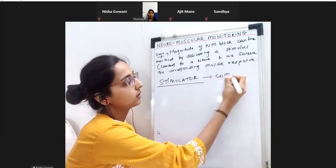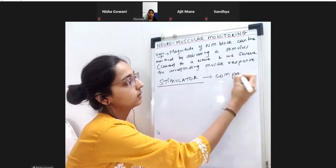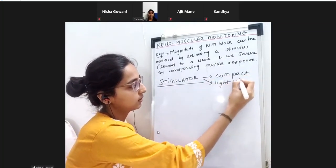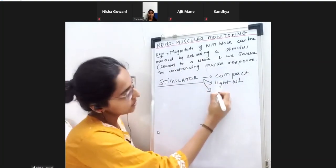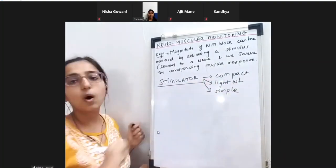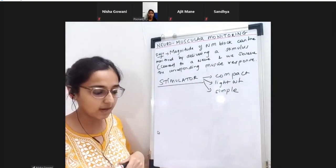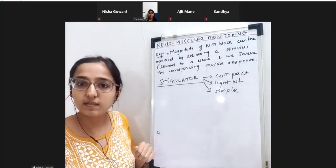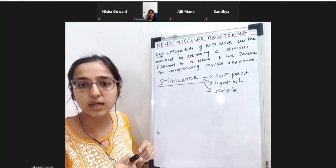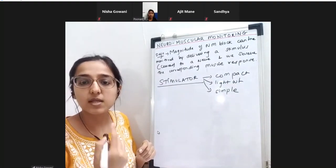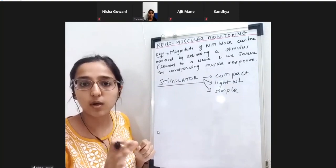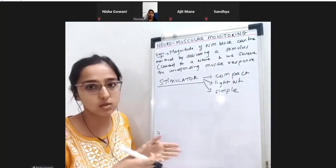It should be compact, lightweight, and very simple to operate. This stimulator will be delivering a current that will go and stimulate the nerve, and the responding muscle contraction may or may not occur, depending on whether the block has set because of the muscle relaxant.